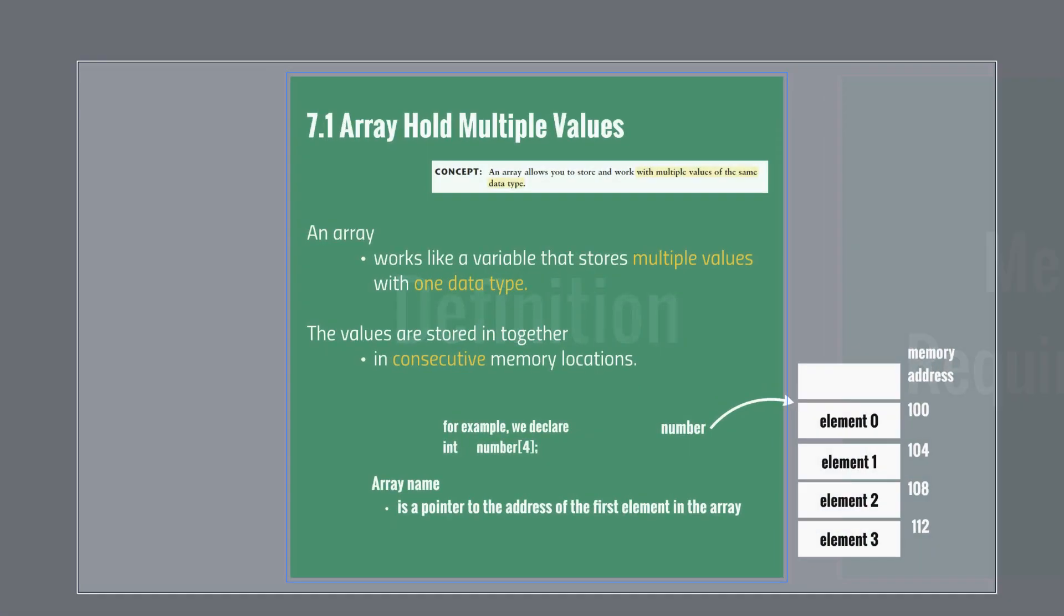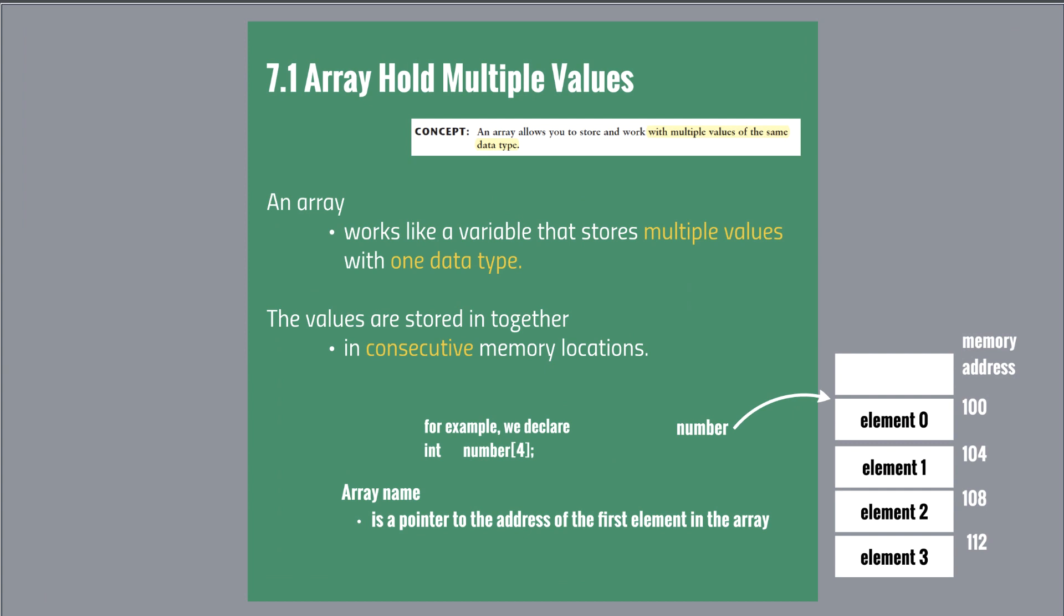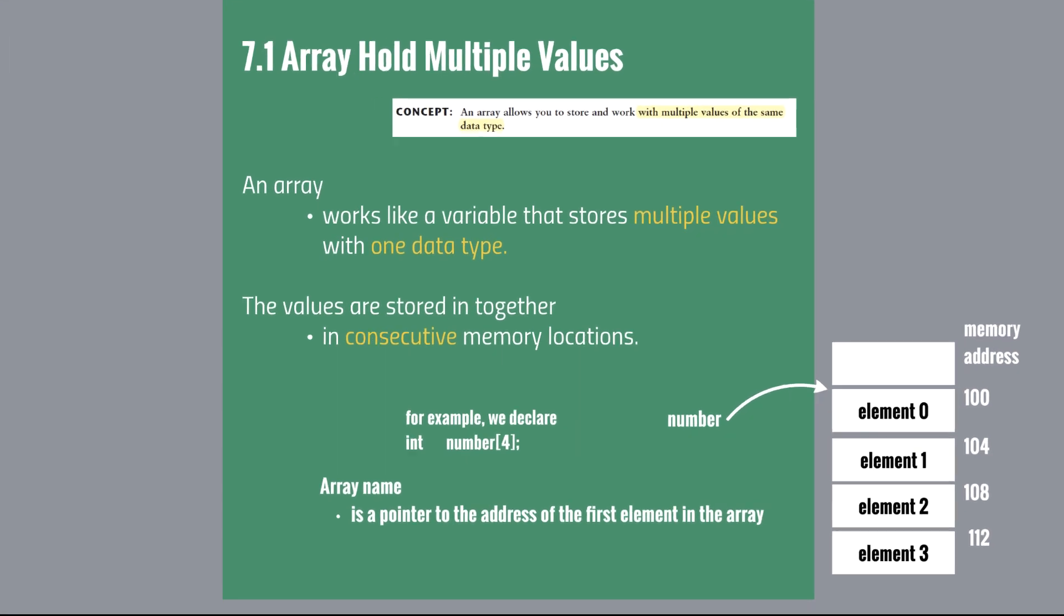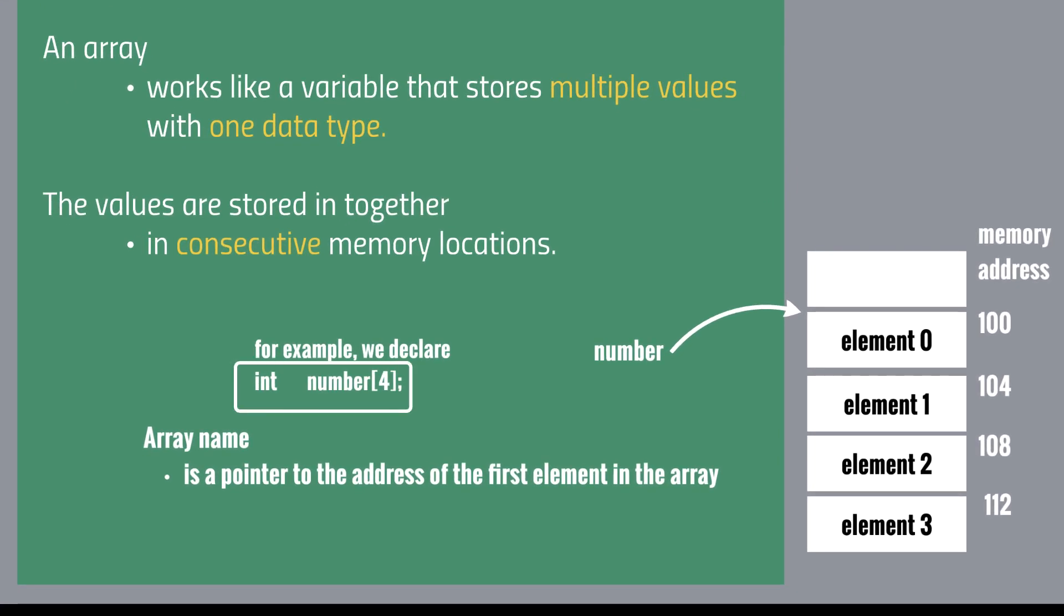Now let's take a look at the definition of arrays. An array is a variable that stores multiple values with one data type. And also all values in an array are stored in consecutive memory locations. In this example, we declare the integer array with 4 elements.